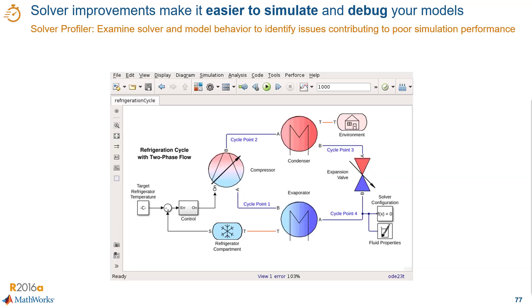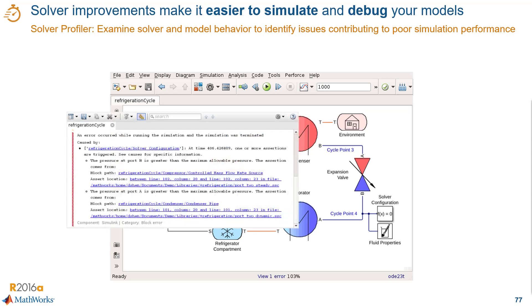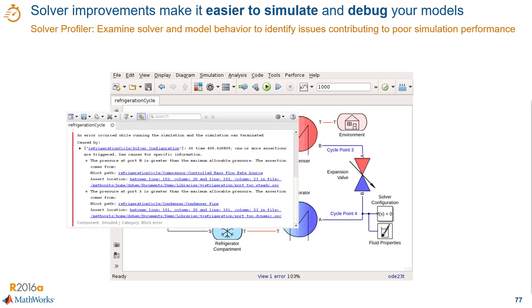Another solver improvement is the solver profiler. The solver profiler gives you a simple way to find issues that cause poor simulation performance through solver statistics rather than guessing what could be wrong with the model. As an example, let's imagine we simulate this model here. When we run it, we get an assertion error that points to a couple of places.